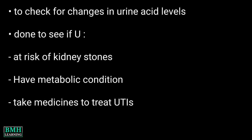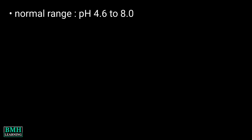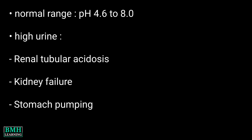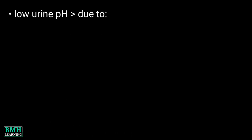Some medicines are more effective in a particular pH range. The normal values range from pH 4.6 to 8. A high urine pH may indicate renal tubular acidosis, kidney failure, stomach pumping, or a UTI.